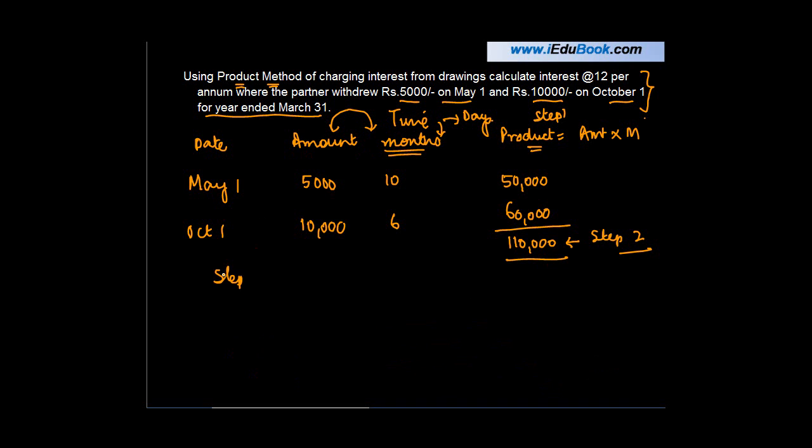As step 3, what we do is on this product, which is 110,000, we find out the interest. What is the rate of interest? It's 12 upon 100 for one month. If the denomination is in months, you find it for one month. If it is in days, you find it for one day.